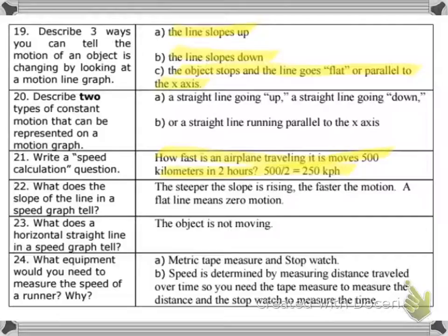Twenty-two. What does the slope of the line in a speed graph tell you? Again, this, I go over in the just the facts about graphing speed, and if this confuses you, you can go back and watch that, or just come and ask your teacher, go ask your teacher. But basically, the steeper the slope is rising, the faster the motion. Flat line means zero motion. So here, the person is not moving. Here, they're moving a little bit. Here, they're moving very fast, okay? Because they're going a great deal of distance.